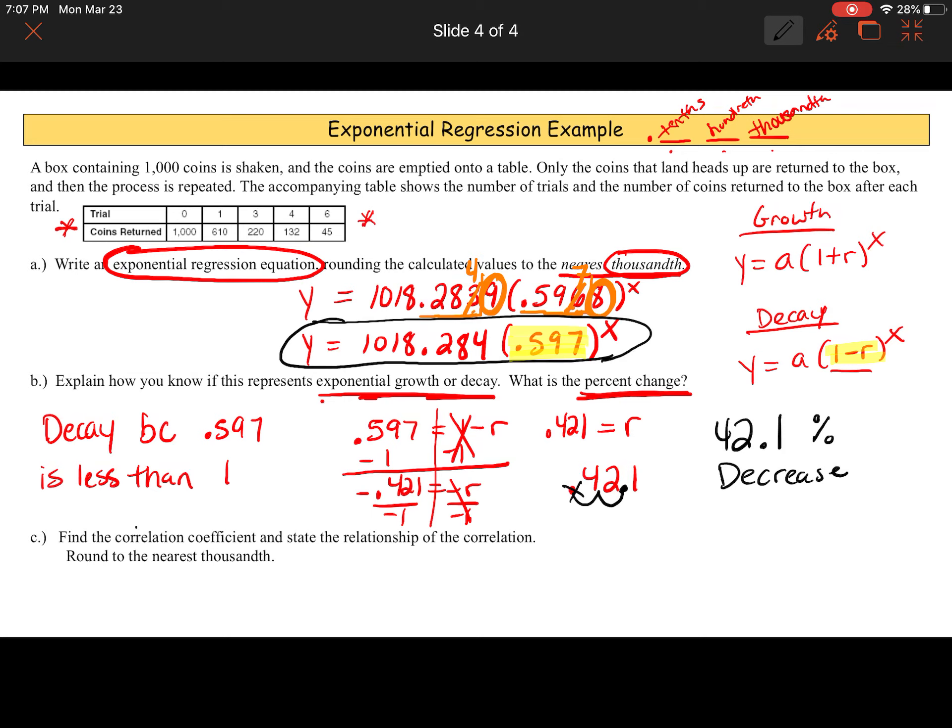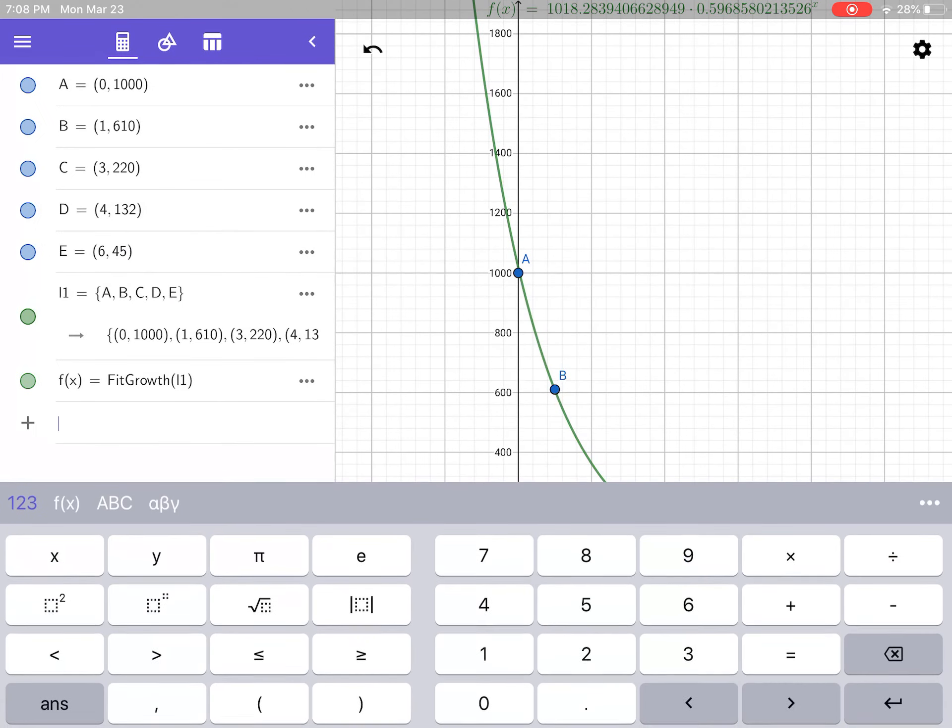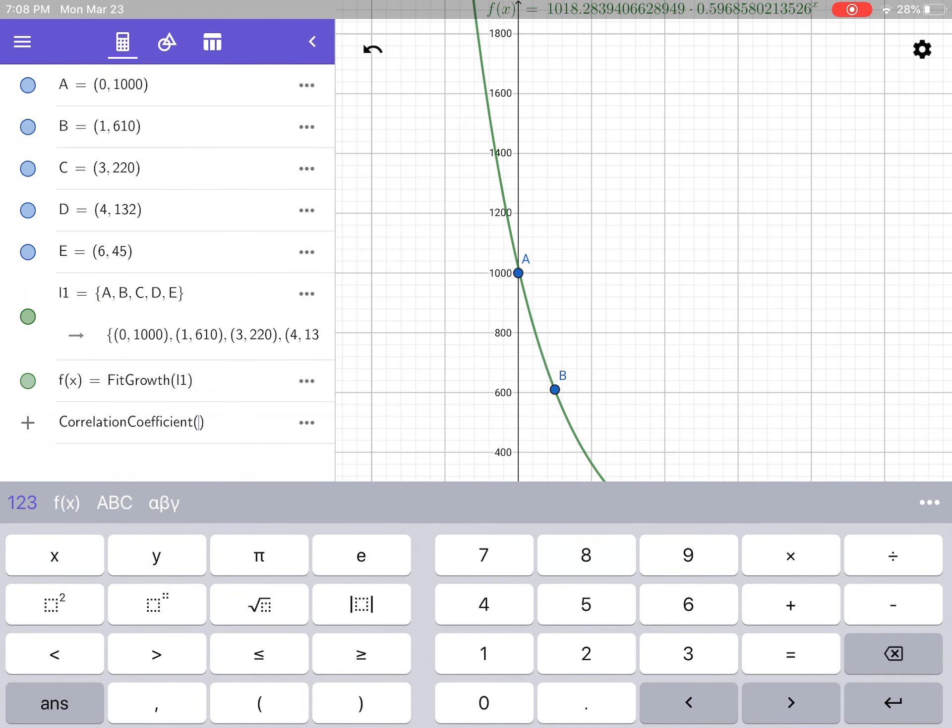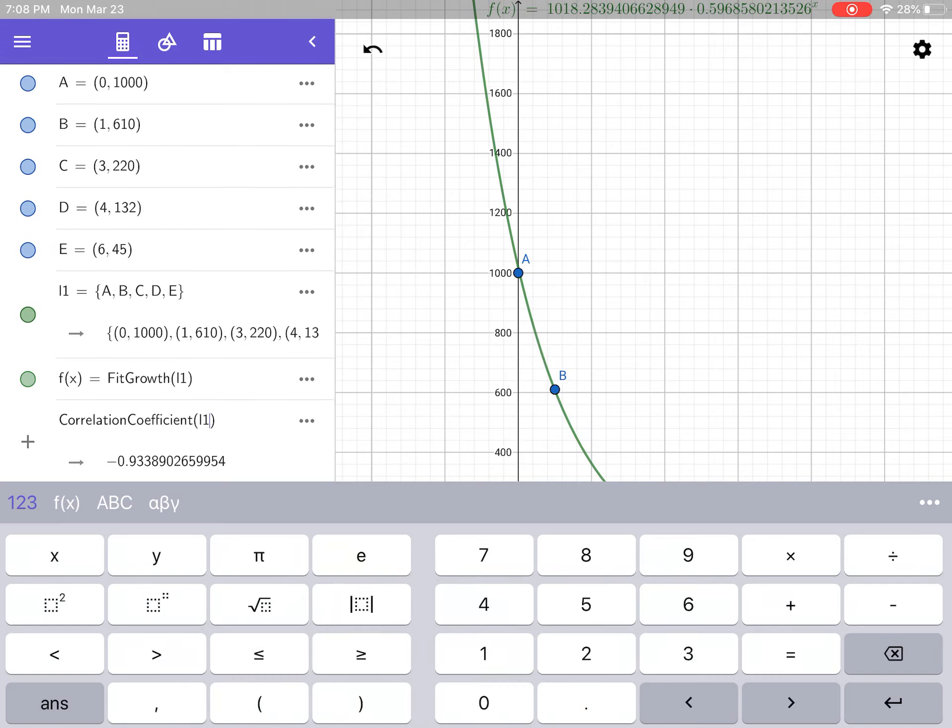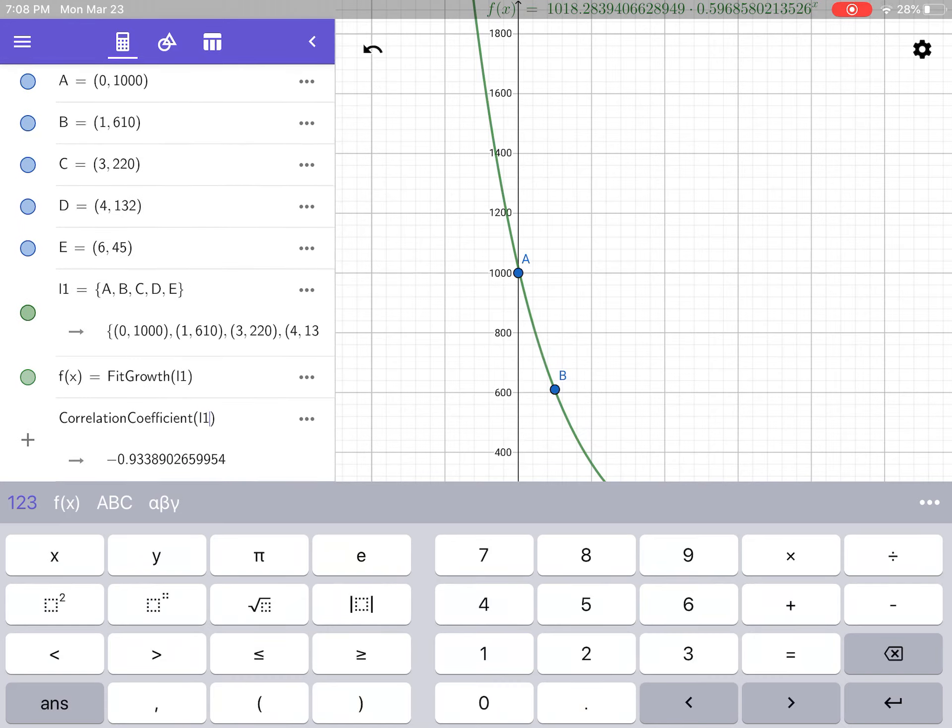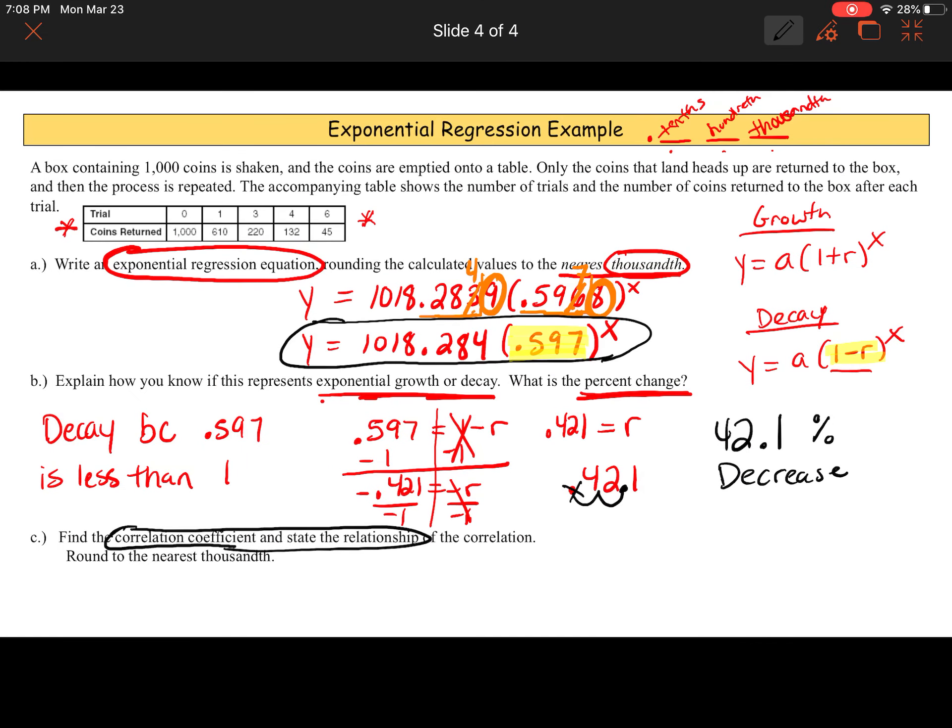Now, we can also find the correlation coefficient for an exponential graph, the same way we do it for a linear. So, C says find the correlation coefficient and state the relationship. So, I'm going to go to my GeoGebra. Don't get rid of anything. Go to your input. Triple dot. Correlation coefficient. We're using the same list, L1. There's my correlation coefficient. So, negative 0.9338. Round to the nearest thousandth. So, 1, 2, 3. That's the thousandth place. 5 or above, give this number a shove. 8 is bigger than 5. So, we give this number a shove up to 4. So, really, my correlation coefficient is negative 0.934.